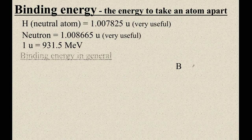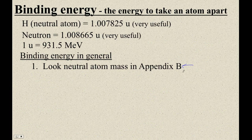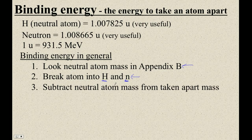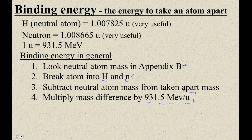So in general, what you do step by step: look up the neutral atom mass. Figure out how many hydrogens and how many neutrons to break it up into. Subtract the neutral atom mass from the taken-apart mass. Then multiply the difference by 931.5. That's going to be our mantra — we're going to multiply a lot of mass differences by 931.5. Not so bad!